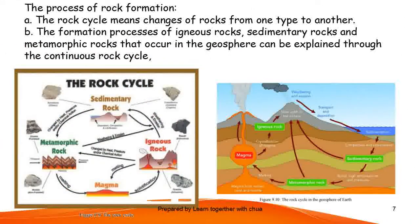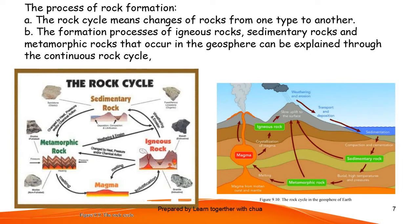The progress of rock formation. The rock cycle is the main chain of rock changing from one type to another. The formation process of igneous rock, sedimentary rock, and metamorphic rock that occurs in the biosphere can be explained through the continuous rock cycle.